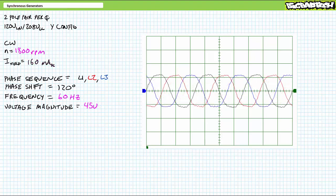Now, let's keep the DC field excitation current at 160 milliampers and increase the prime mover speed to 1,800 RPM. Something interesting happens. Not only does frequency increase to 60 hertz, but also induced voltage magnitude jumps to 45 volts. Interesting indeed. Prime mover rotational speed appears to influence both induced voltage magnitude and frequency.